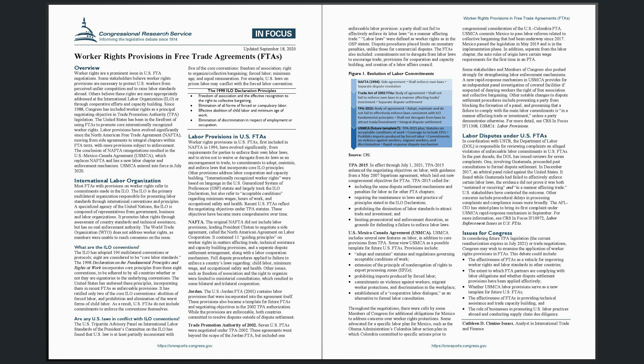What are the ILO conventions? The ILO has adopted 194 multilateral conventions or protocols. Eight are considered to be core labor standards. The 1998 Declaration on the Fundamental Principles and Rights at Work incorporates core principles from these eight conventions, to be adhered to by all countries whether or not they are signatories to the underlying conventions. The United States has endorsed these principles, incorporating them in recent FTAs as enforceable provisions.